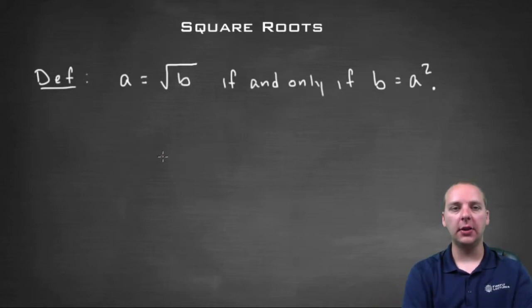So we'll start with a definition here. We'll say that a number A equals the square root of a number B if and only if B is equal to A squared. Now I know that definition is a little confusing so we'll clarify it.